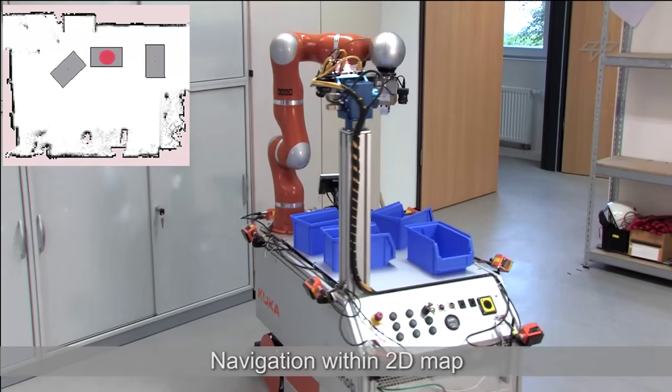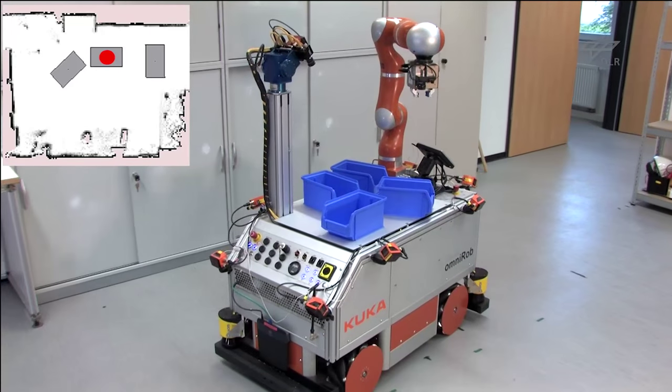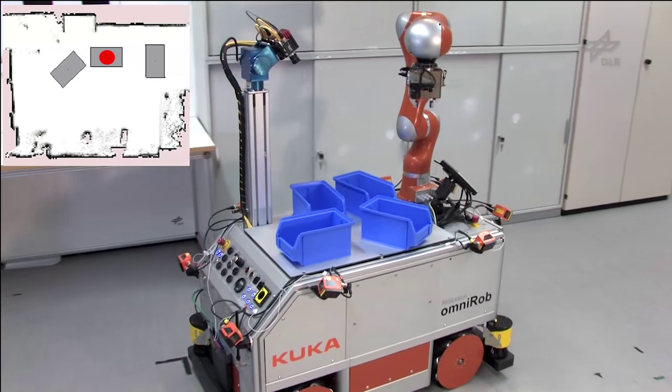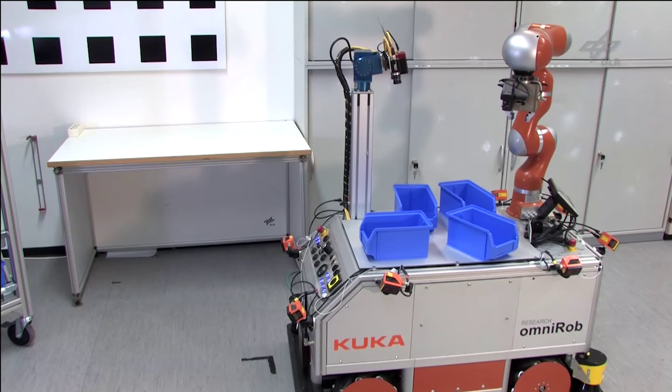The task is carried out by a DLR-modified KUKA OmniRob. The mobile platform, which features an omnidirectional drive, is extended by a lightweight arm with gripper, a pan-tilt unit and a multitude of sensors.